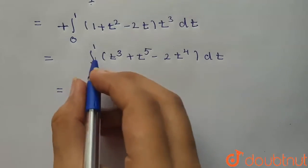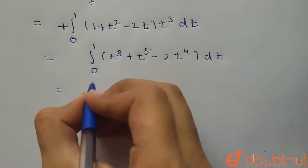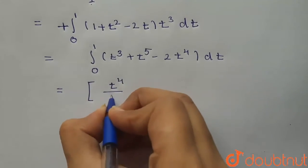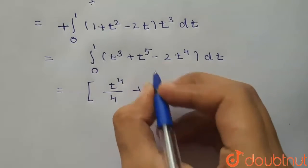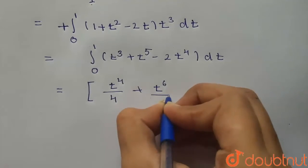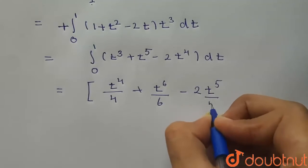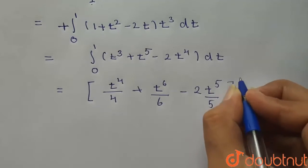Integrating this, we get t⁴/4 plus t⁶/6 minus 2t⁵/5, evaluated from 0 to 1.